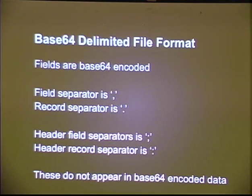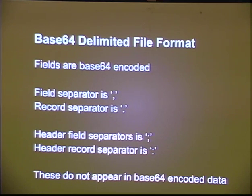So we came up with a base64-delimited file format. We largely kept it the same as CSV but took away a fairly key feature. Every field is base64 encoded, and then we separate them with commas and full stops. We also added the opportunity to put in headers — for creating tables — with different delimiters. None of these delimiter characters appear in base64-encoded data, so there's no way you can mistake a delimiter for some data.